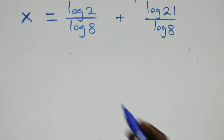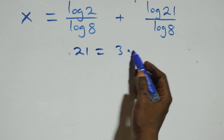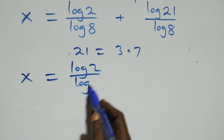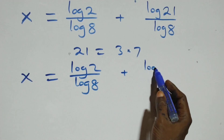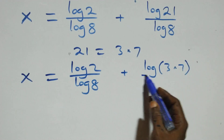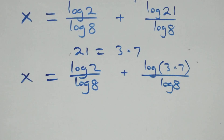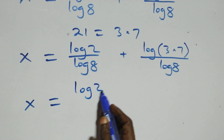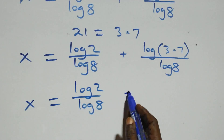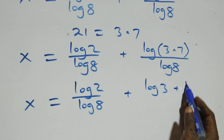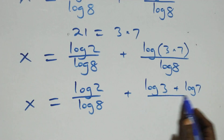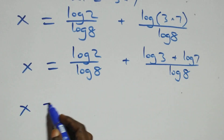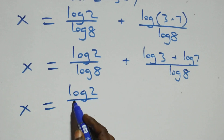We can also express 21 as 3 times 7. So x equals log2 over log8 plus log(3×7) over log8. Applying the product rule again: x equals log2 over log8 plus log3 over log8 plus log7 over log8.